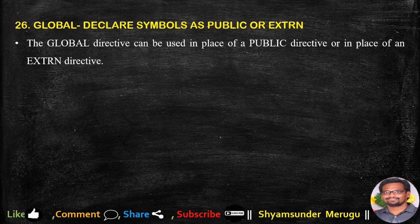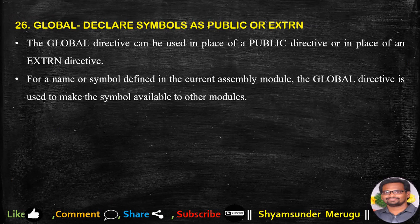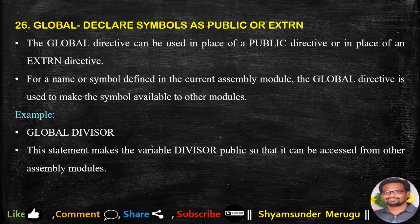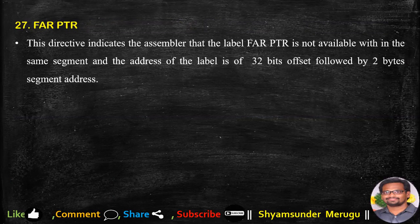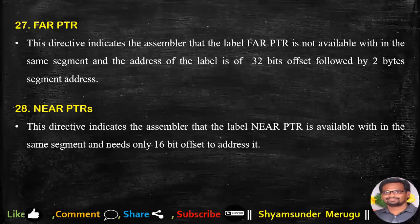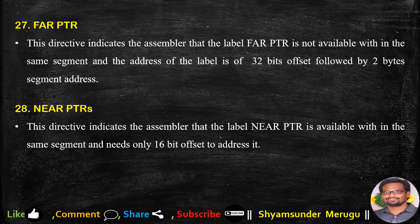GLOBAL declares symbols as public or external. The GLOBAL directive can be used in place of a PUBLIC or EXTERN directive. For a name or symbol defined in the current assembly module, GLOBAL makes that symbol available to other modules, for example making a variable 'divisor' public. FAR PTR indicates that the label for a pointer is not within the same segment and its address is 32 bits (offset followed by a 2-byte segment address). NEAR PTR indicates that the label is within the same segment and needs only a 16-bit offset to address it.